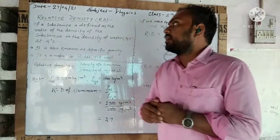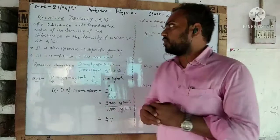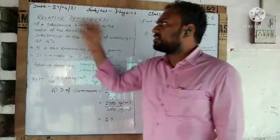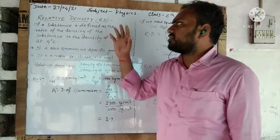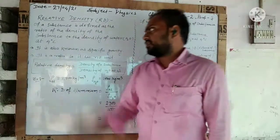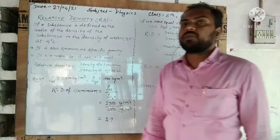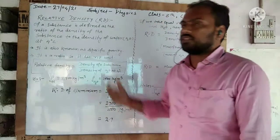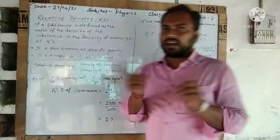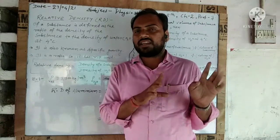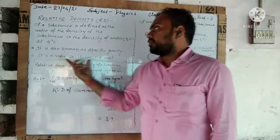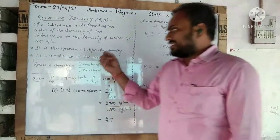That is why scientists chose four degrees Celsius as the reference temperature, at which the density of water is maximum. Above four degrees Celsius and below four degrees Celsius, the density of water decreases. So, relative density of a substance is defined as the ratio of the density of the substance to the density of water at four degrees Celsius. It is also known by another name: specific gravity.